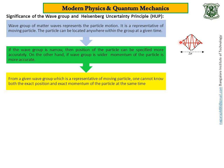The particle can be seen anywhere within this group, whose width is delta x. If the wave group is narrow, then the position of the particle can be specified more accurately. On the other hand, if the wave group is wider, the momentum of the particle is more accurate. Taking x1 and x2 as the boundaries, x2 minus x1 is delta x — the width of the group. If you try to locate the particle, the probability of locating it will be more accurate if the group size is very small. It is like catching a rat confined to a small carton box.